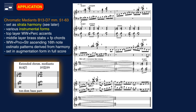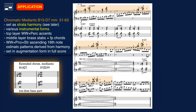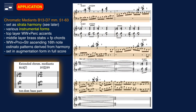This chromatic median pair returns more extensively in the fast B section, where it is set as strata harmony — a combination of multipart layers with each having independent voice leading. In each layer you'll also find different instrumental forms. The top layer is a four-part setting for woodwinds and xylophone playing ascending and accented eighth notes. The middle layer is set for brass that juxtapose stab chords and fortepiano crescendo sustained chords. The third element is a set of ascending sixteenth note patterns derived from the local harmony.